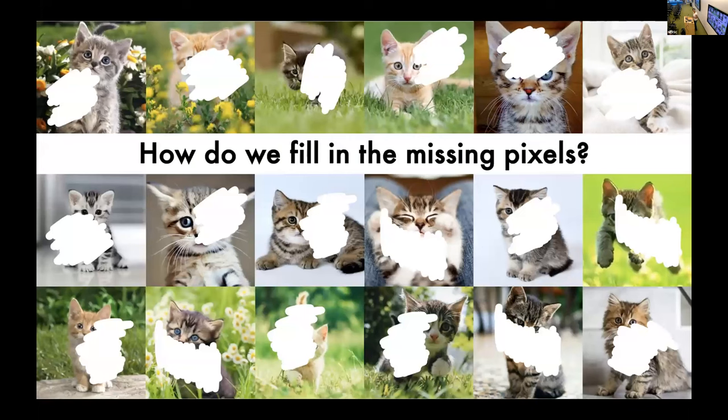All right, so I want to start my presentation with a little analogy. Say we have a bunch of cat photos. We have a lot of these photos, but unfortunately, in every photo, we're missing some pixels. So my question is, how do we fill in these missing pixels?